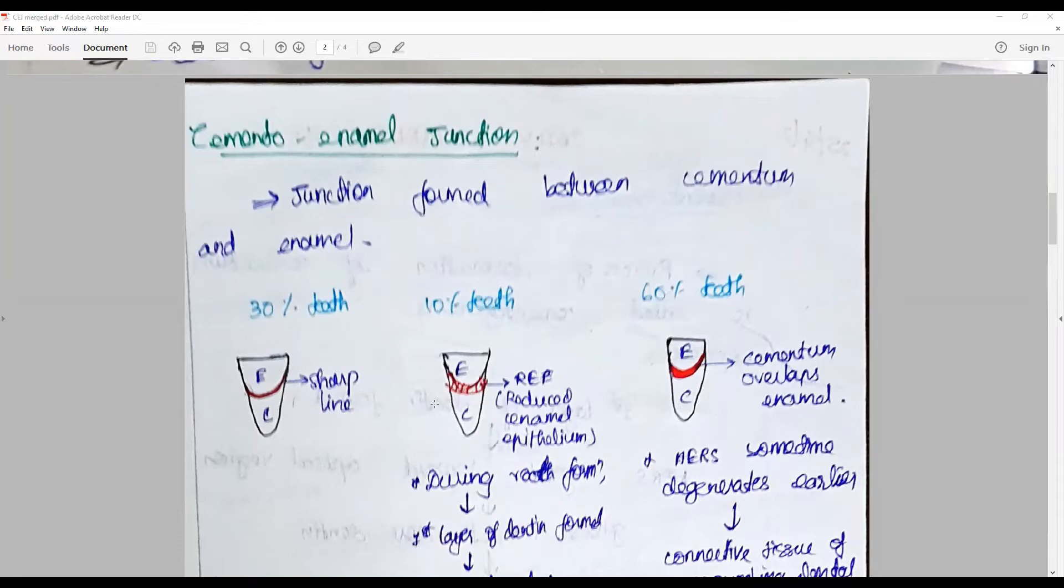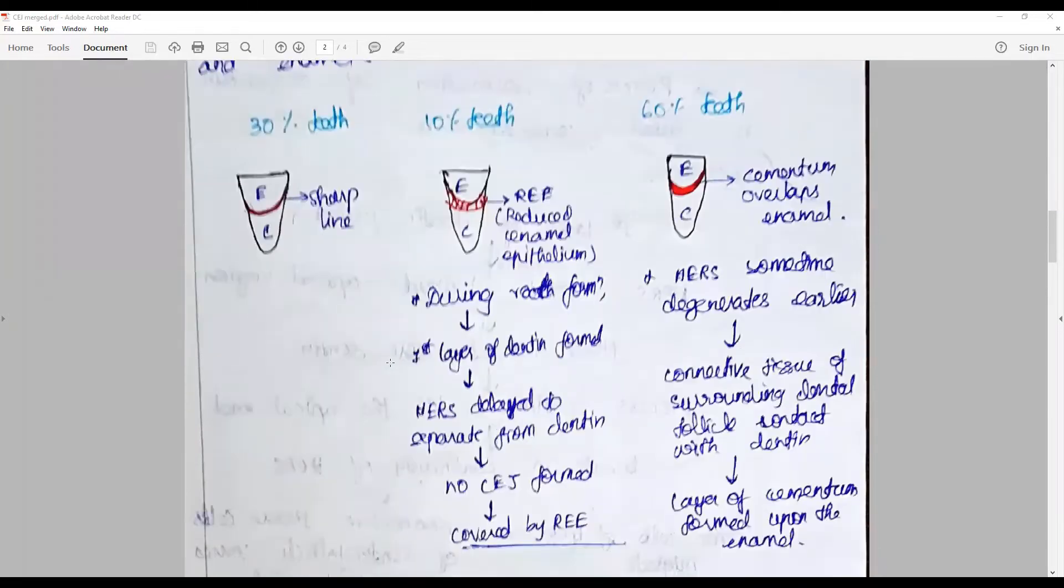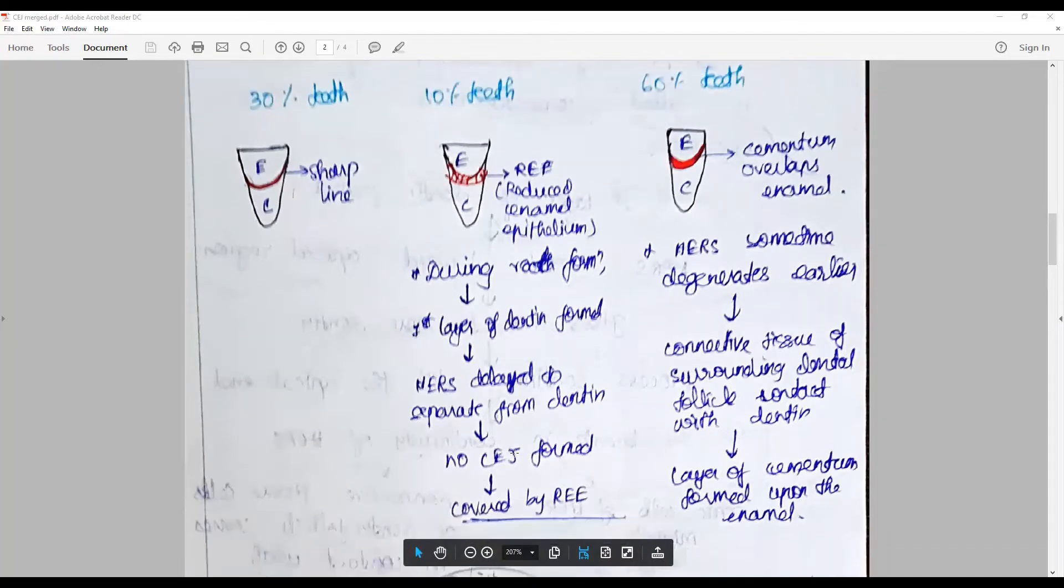In 10 percentage of the tooth both the entities do not meet, exposing the radicular dentine or the root dentine to outside environment. In 30 percentage of the tooth they just meet perfectly at a knife joint. In this 10 percentage of the tooth what happens is during the root formation the first layer of dentine is formed and there is a delayed HERS exposure, leaving a bit of a layer of dentine with no CEJ, and that is covered by the reduced enamel epithelium when erupted.